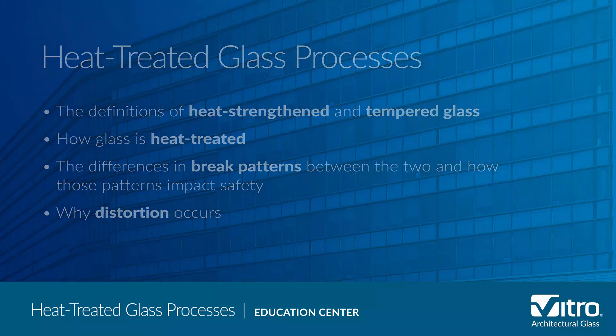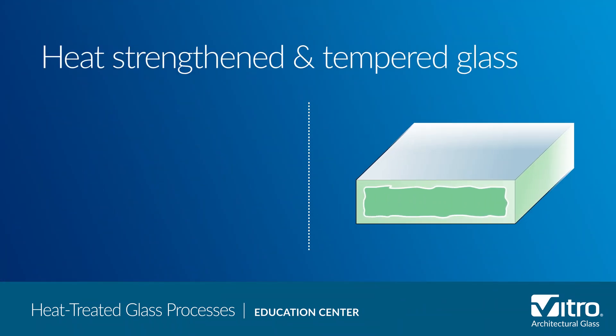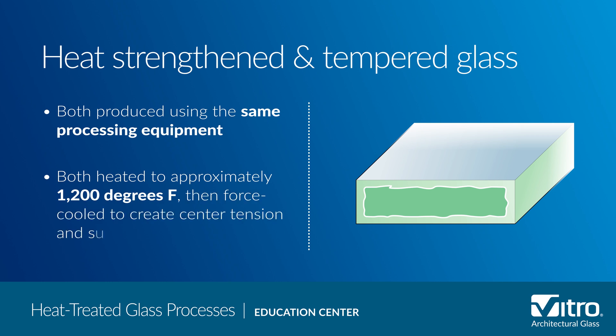We'll start with the similarities between the two. Both heat strengthened and tempered glasses are produced using the same processing equipment. The glass is heated to approximately 1,200 degrees Fahrenheit, then force cooled to create surface and edge compression in the glass.